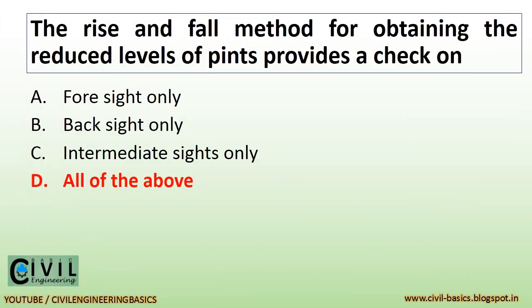The rise and fall method for obtaining the reduced levels of points provides a check on foresight, backsight, and intermediate sights also.